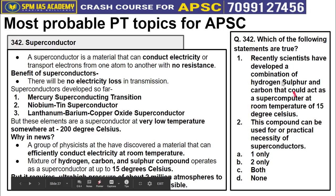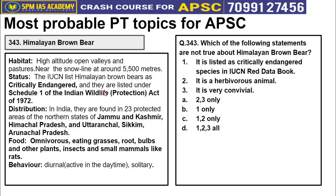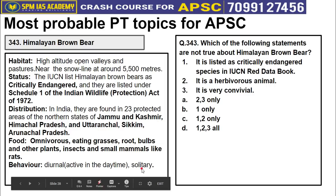Please attempt the question based on topic 342. Topic 343 is about the Himalayan Brown Bear. Its habitat is high-altitude open valleys and pastures near the snow line at about 5,500 meters. Its IUCN Red Data Book status is Critically Endangered and it is listed under Schedule 1 of the Wildlife Protection Act 1972. It is found in about 23 protected areas across northern and northeastern states including Jammu & Kashmir, Himachal Pradesh, Uttarakhand, Sikkim, and Arunachal Pradesh. It is omnivorous — eating grasses, roots, bulbs, insects, and small mammals like rats. It prefers solitary living and is diurnal — active during daytime.